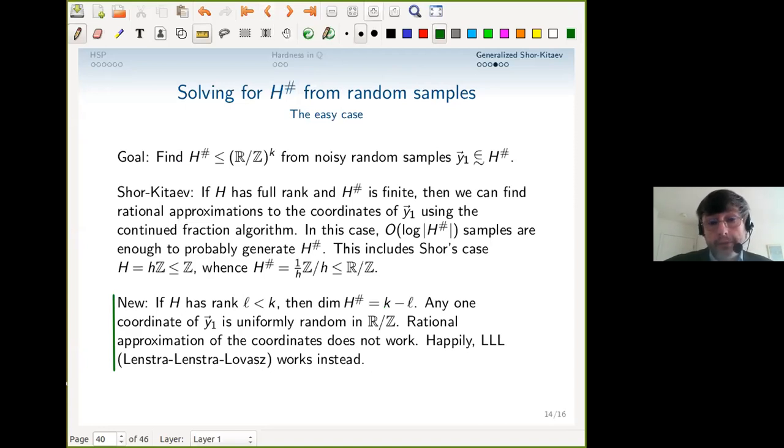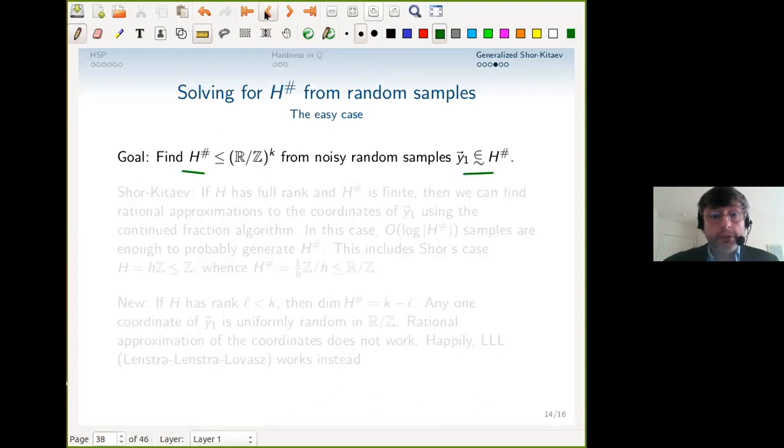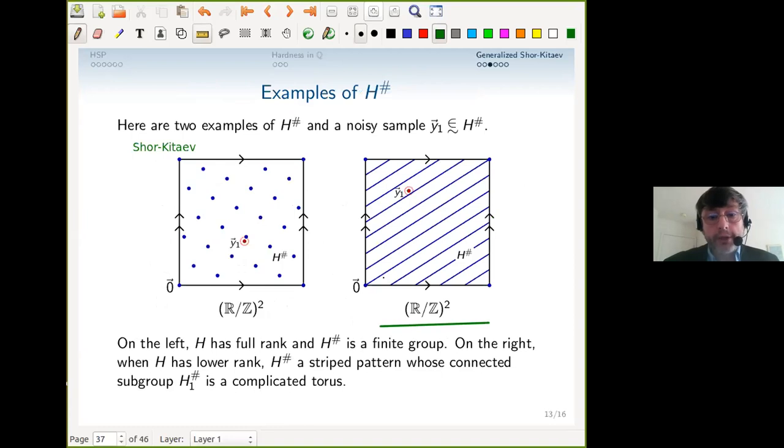But here's my contribution to the algorithm: you can use the LLL algorithm instead. The idea in this hard case is, if we had a y_0—we imagine that y_1 is a noisy version of y_0, which is actually flat random in H^♯—then almost surely it densely generates the connected subgroup H_1^♯ of H^♯. So we're going to look for multiples of y_1, which we have, and imagine them as multiples of y_0 which are near the origin. Returning to the picture, we have y_1 here, but we're going to look for multiples near zero because there probably are multiples near zero.